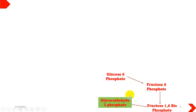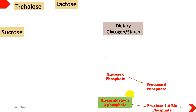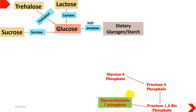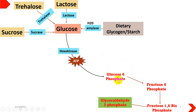One of the main entry points is where glucose is converted into glucose-6-phosphate, which we studied in the main glycolysis pathway. Glucose is converted into glucose-6-phosphate with the help of the enzyme hexokinase, and of course it will utilize one ATP.